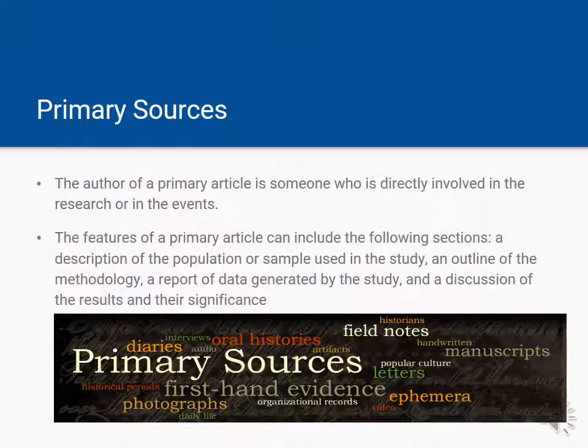A primary source is a document or record which reports a study, experiment, event, or other phenomenon first-hand. For example, when a nurse researcher interviews patients about their health behaviors, a pharmaceutical company conducts clinical trials on a new drug, or a healthcare facility surveys its nursing staff, they are creating primary information.